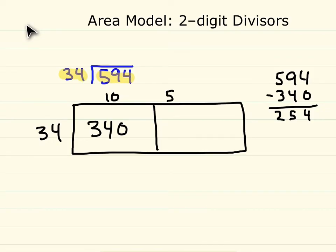We would know that 4 times 5 is 20, 30 times 5 is 150, so it would be 170. That's a pretty good chunk.